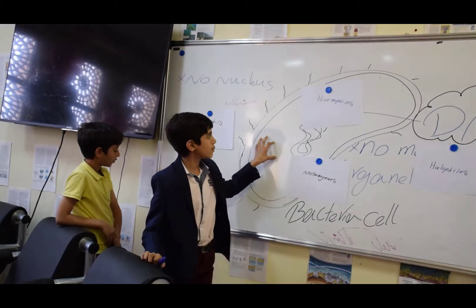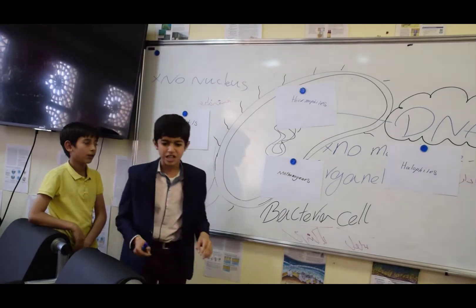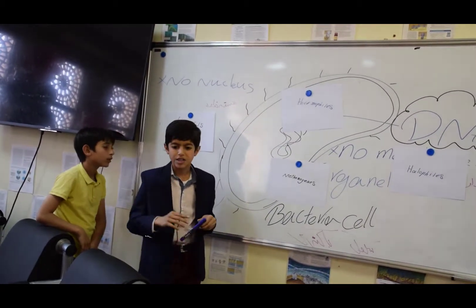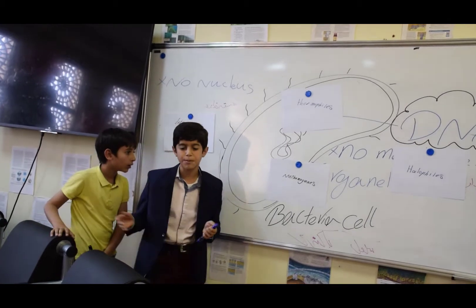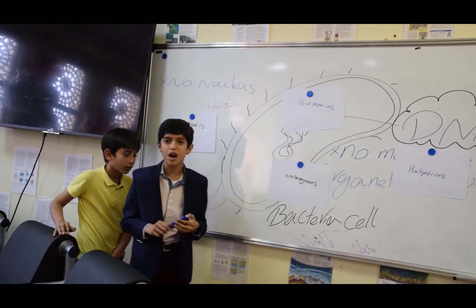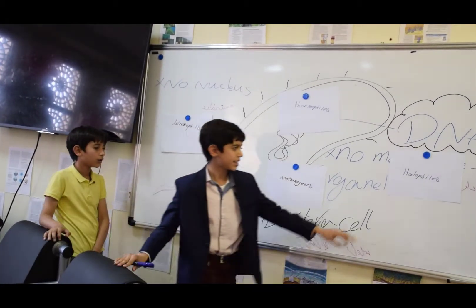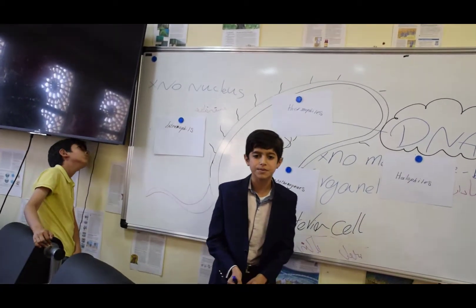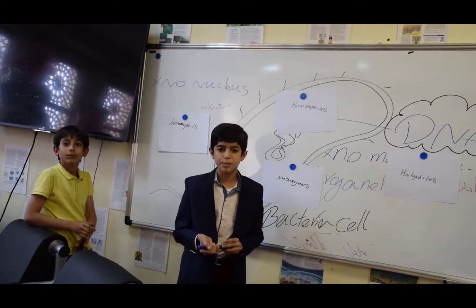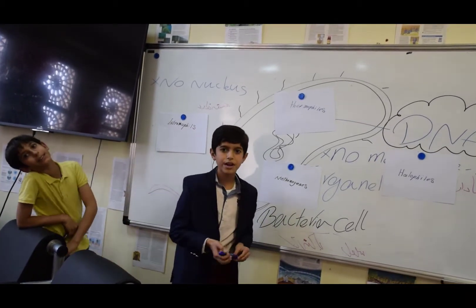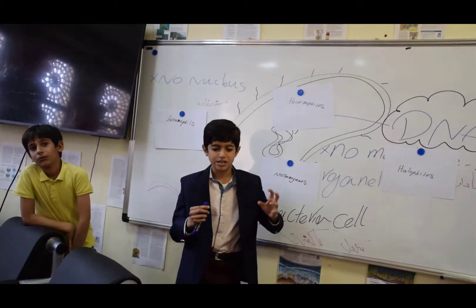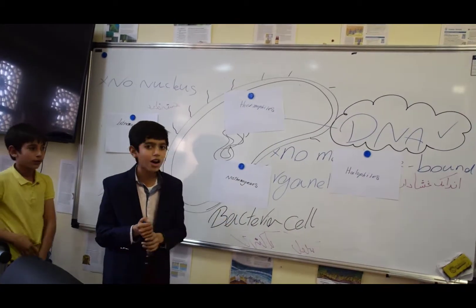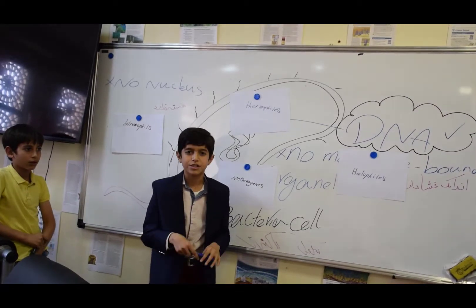The second one is thermophiles. They can grow and live in thermophilic places, for example volcanoes or hot places. The third one is halophiles. Halophiles live in, for example, salty rivers and similar places. They have very high salt concentration in their environment.